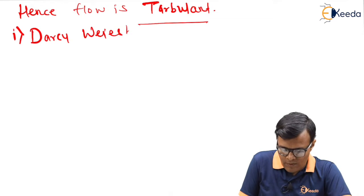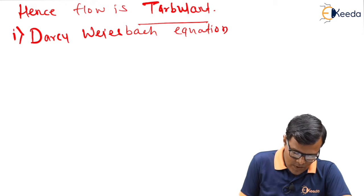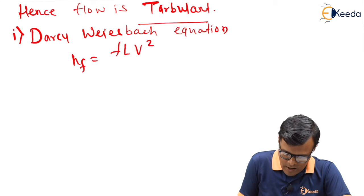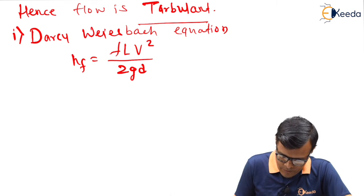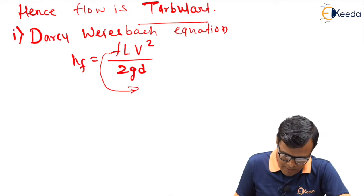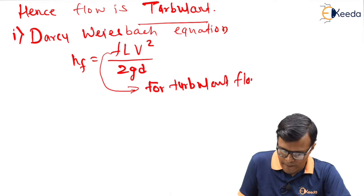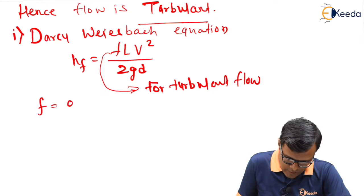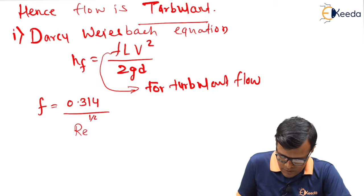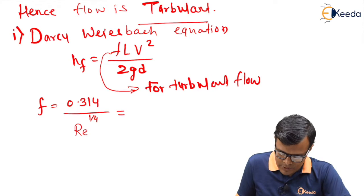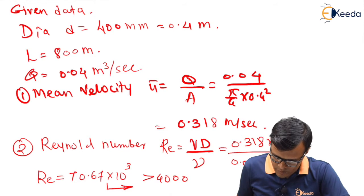Darcy-Weisbach equation is hf equals fLV² upon 2gd. Here this f value can be calculated by using formula for turbulent flow. f equals 0.314 divided by Re to the power 1/4. 1/4 or 0.25 is the same thing. We have Reynolds number value, this is the Reynolds number value that we have calculated. We will use this value.